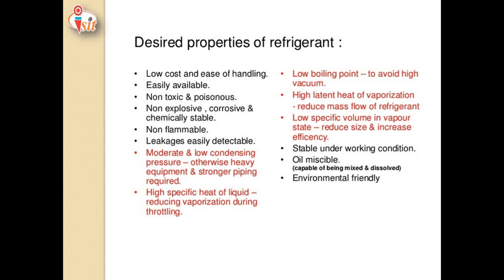The refrigerant should have moderate and low condensing pressure; otherwise heavy equipment and stronger pipes are needed. It should have a high specific heat of liquid, thereby reducing vaporization during throttling. A very important property is a low boiling point to avoid high vacuum — for example, ammonia has a boiling point of minus 33.33 degrees Celsius. Another important property is high latent heat of vaporization, which reduces the mass flow rate of refrigerant.